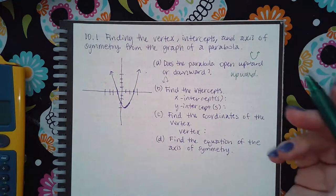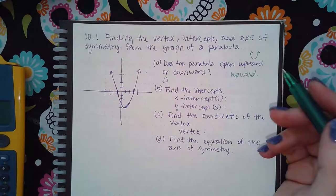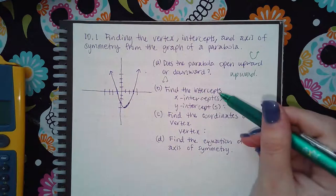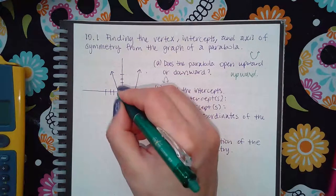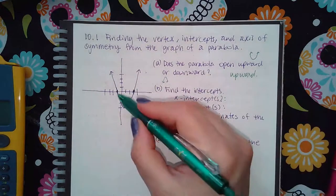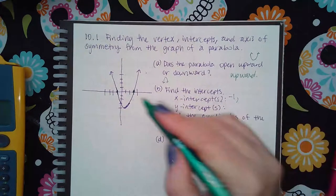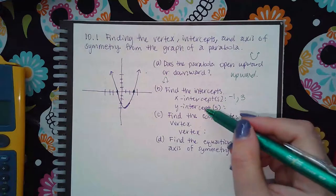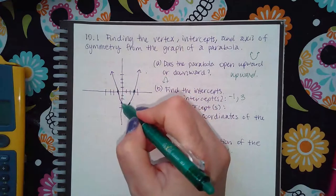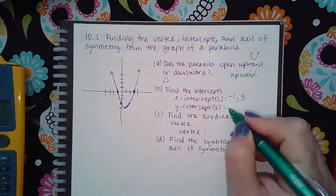Every graph is different, so it may be downward for certain problems. Then finding the intercepts. So x-intercepts are the points where it touches the x-axis. So in my case, here and here. So the values are negative 1 and positive 3. And then the y-intercept is where it touches the y-axis, which happens to be here at negative 3.